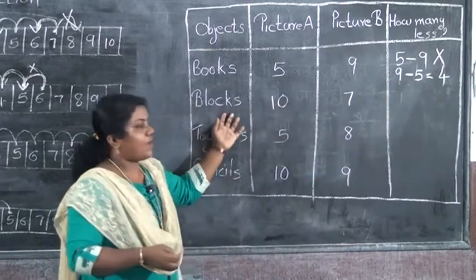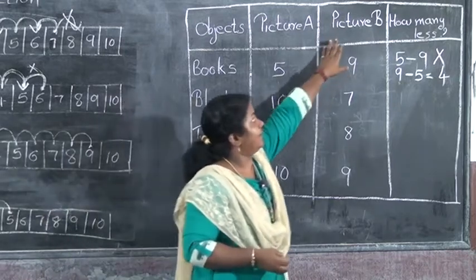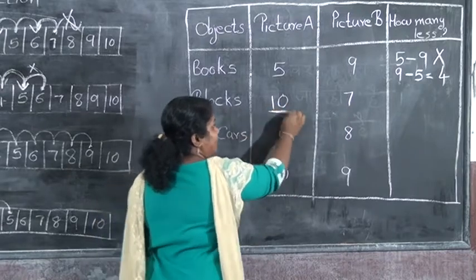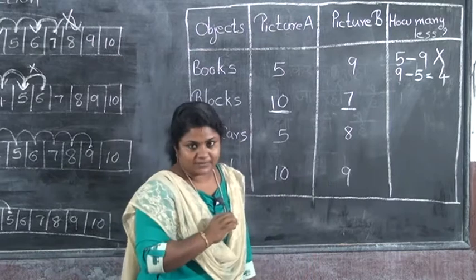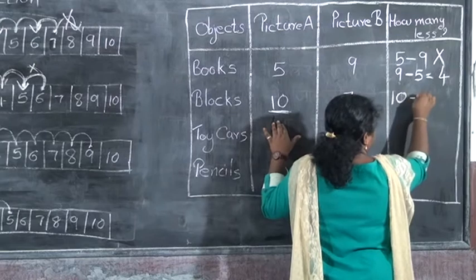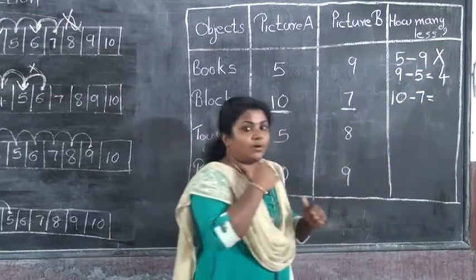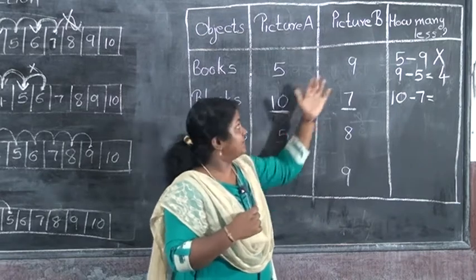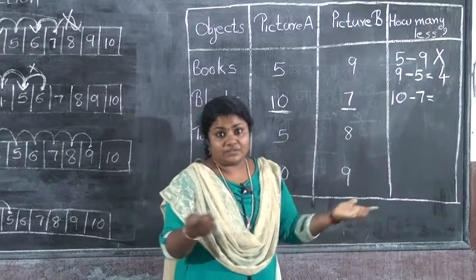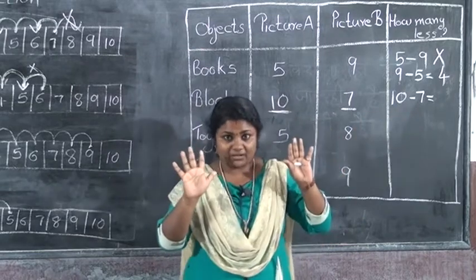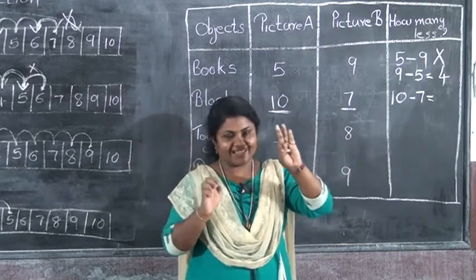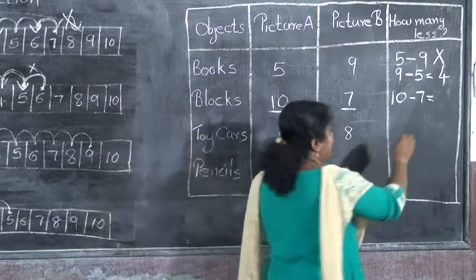The next one: how many blocks in Picture A? That is 10. And in Picture B, there are 7 blocks. 10 is the biggest number, so we write 10 minus 7. Take 10 fingers and fold 7 fingers: 1, 2, 3, 4, 5, 6, 7. The balance is 3. So the answer is 3.